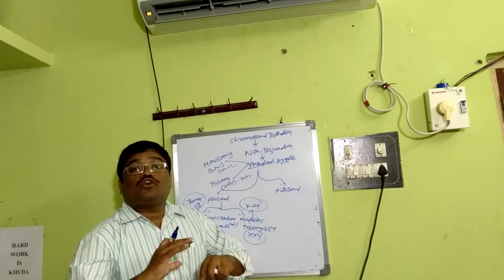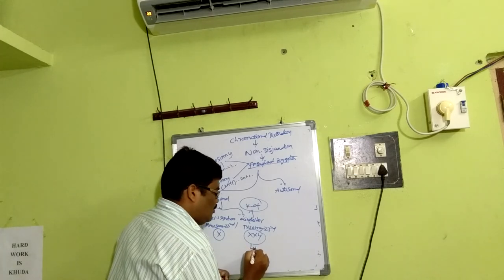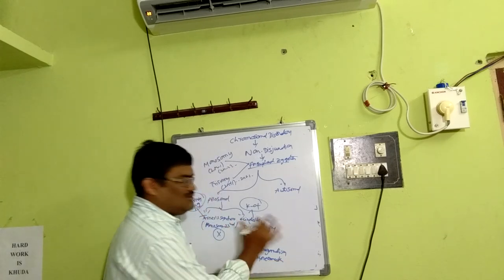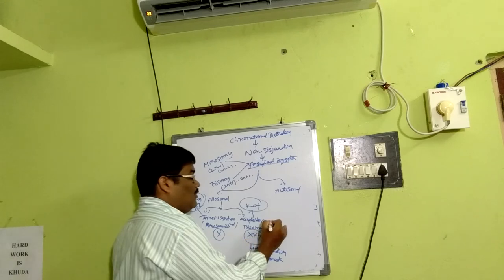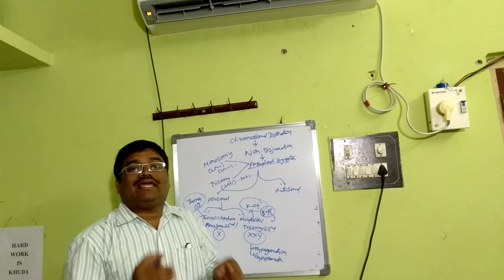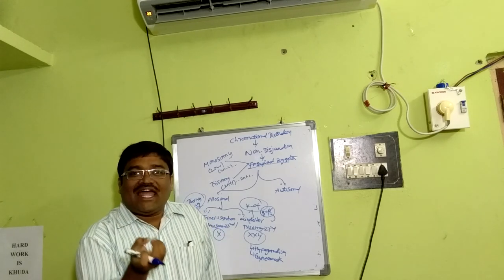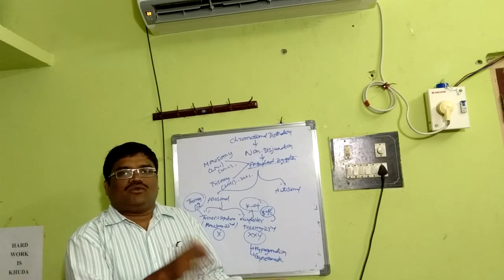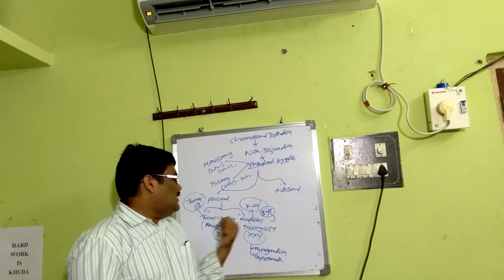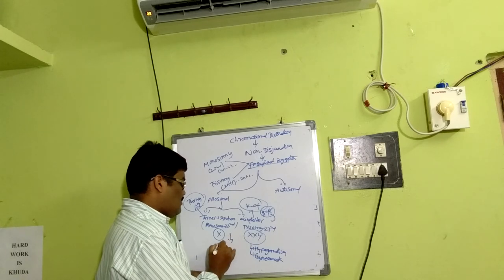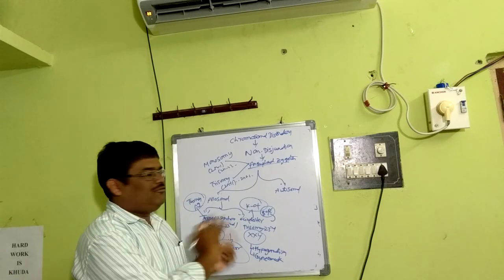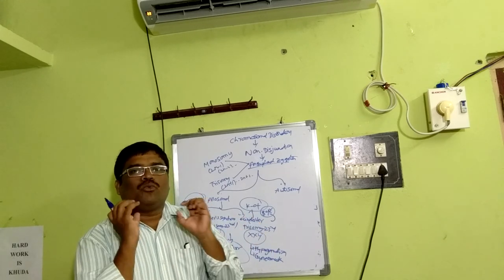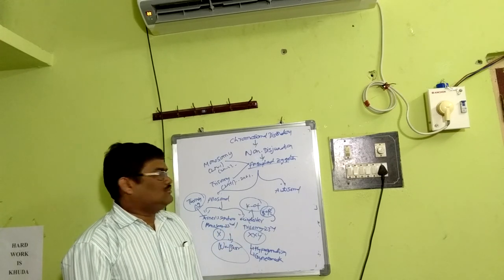Features of Klinefelter's syndrome include hypogonadism and gynecomastia (slight breast development). Klinefelter males show Barr bodies — normally, out of two X chromosomes, one becomes inactivated (Barr body), a feature of females. Since Klinefelter males have XXY, the extra X becomes a Barr body — a male with an abnormal Barr body. Turner's syndrome has no Barr body, since one X chromosome is lost. Turner females show short stature, a broad shield-like chest with widely-spaced nipples, and a webbed neck.